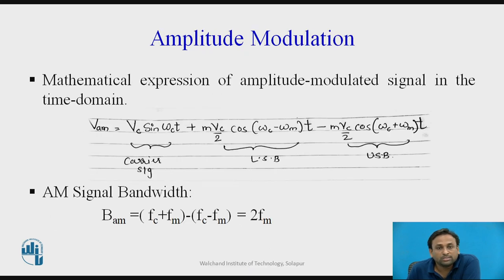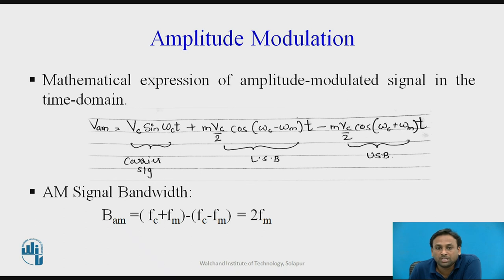Now we will see the mathematical expression of an amplitude modulated signal in the time domain. The output of an AM signal is: Vam = Vc·sin(ωc·t) + (m·Vc/2)·cos((ωc − ωm)·t) − (m·Vc/2)·cos((ωc + ωm)·t). This expression consists of a carrier signal, as well as LSB (lower sideband) and USB (upper sideband).